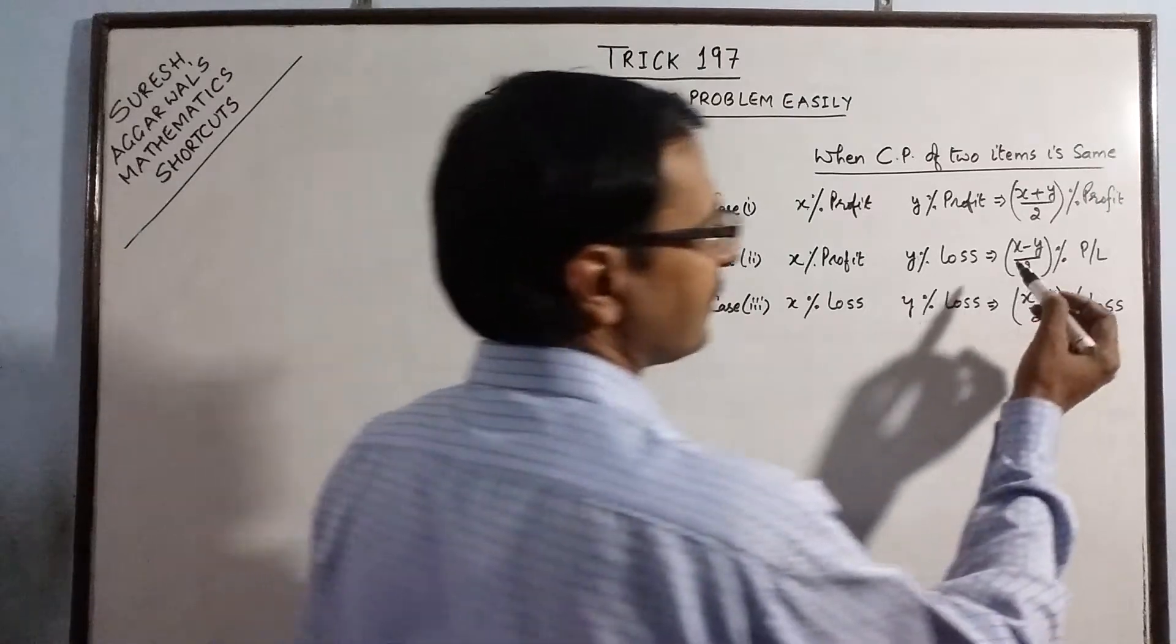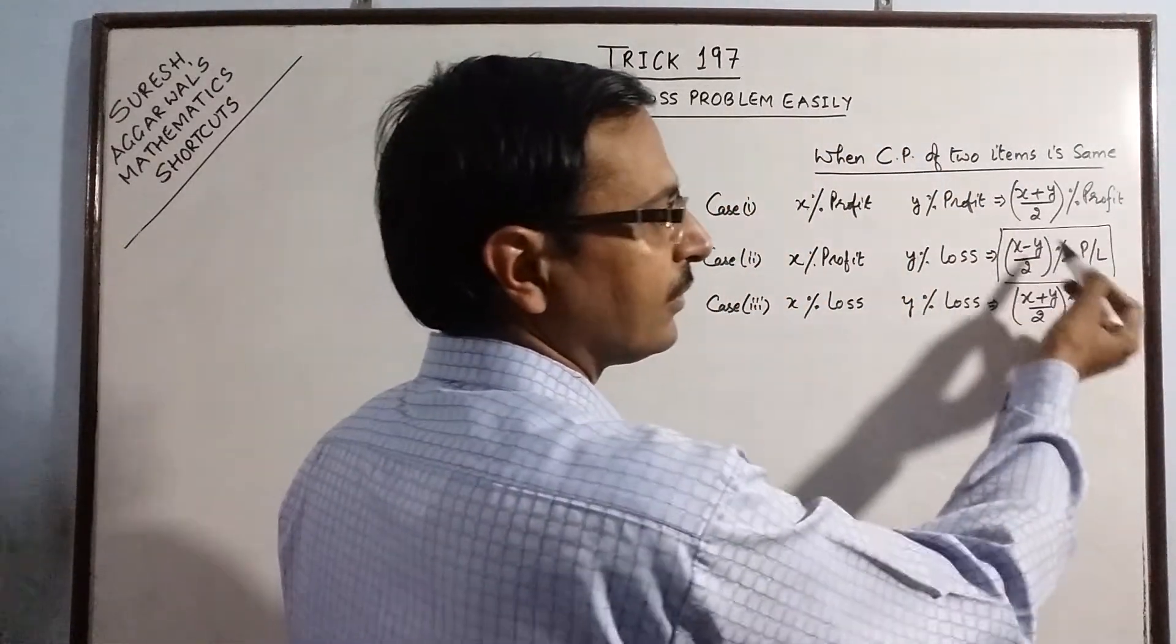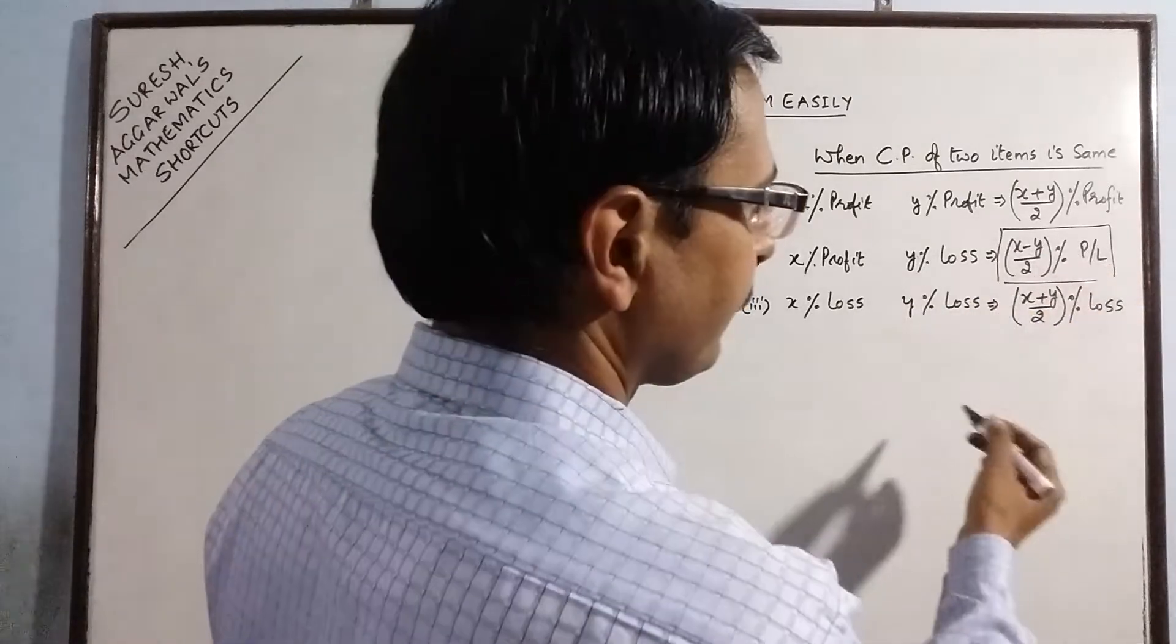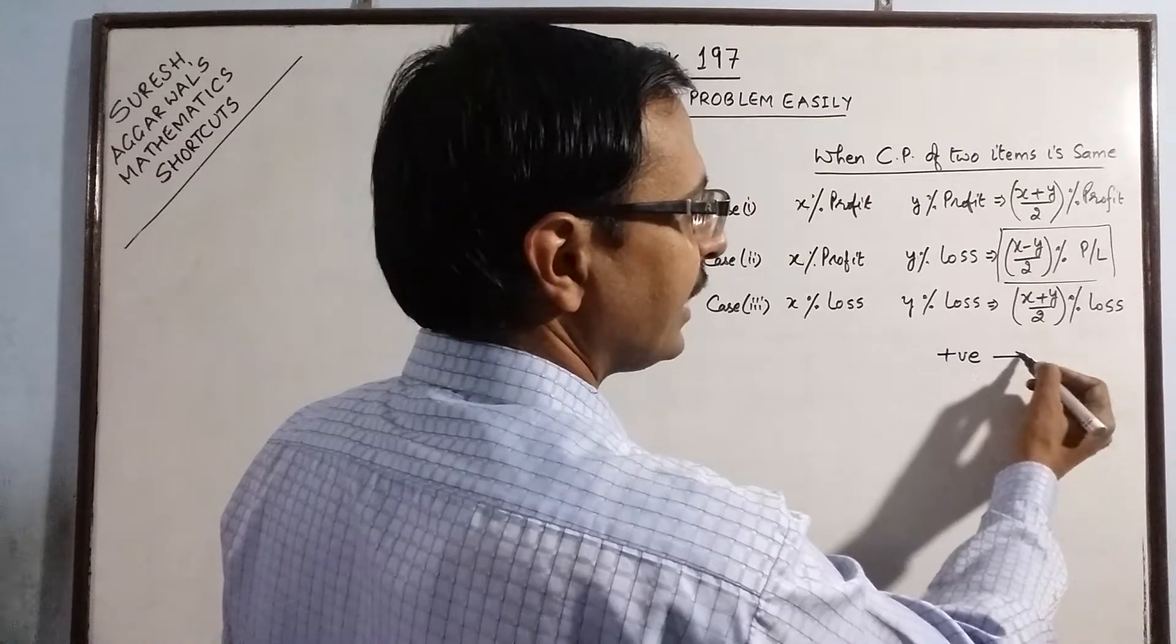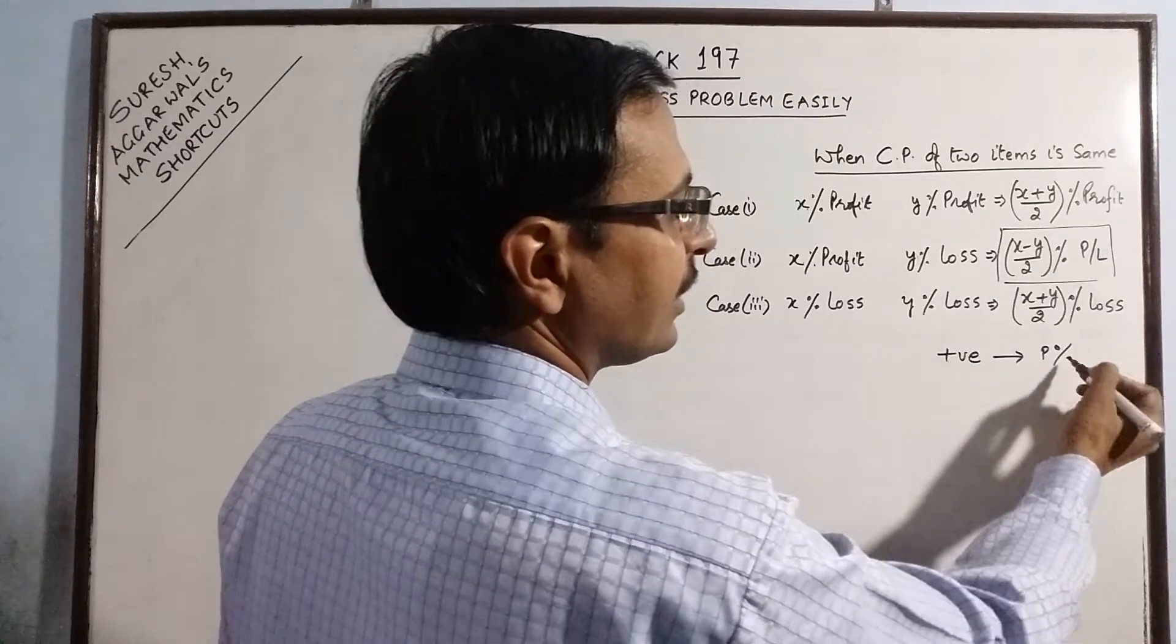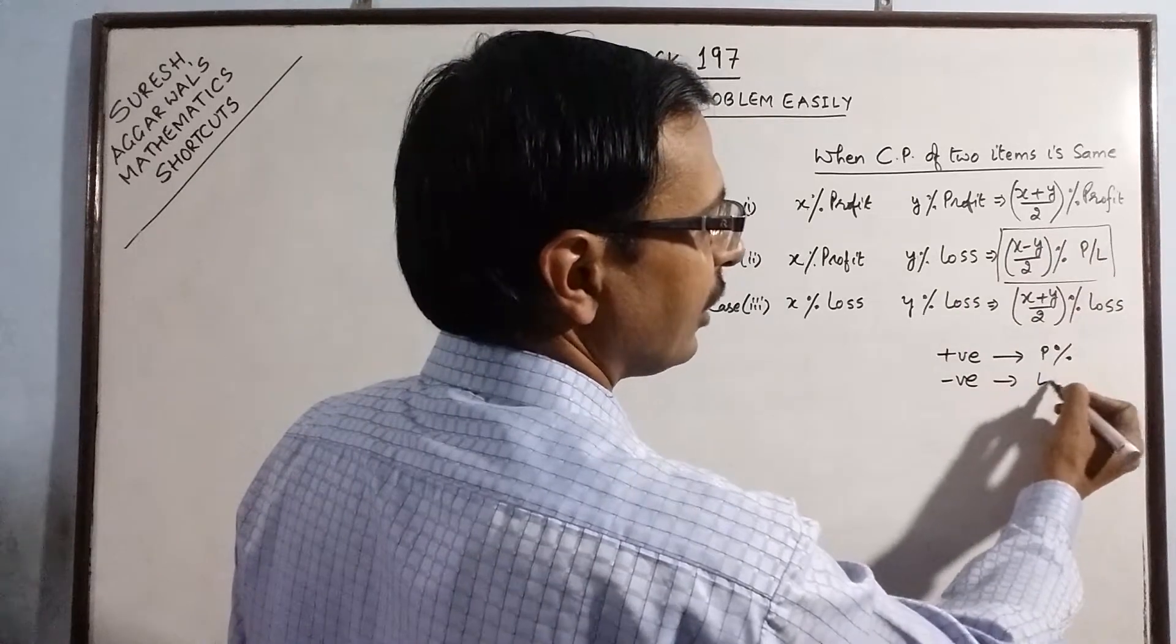So in this case, when we get the final result on substituting these values, the positive, if we get this value as positive, then it is profit percent. If you get x minus y as negative, then you have loss percent.